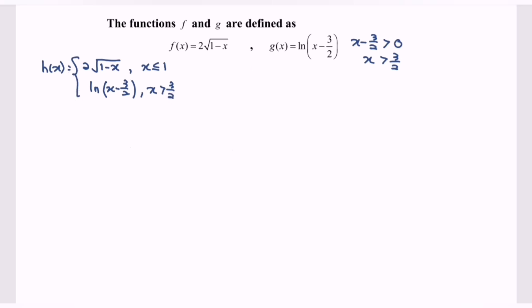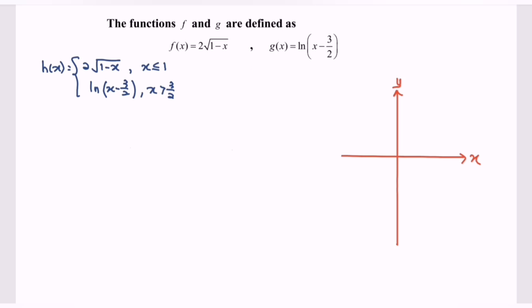That will be the piecewise function for h(x). Now the question asks us to sketch h(x), so we focus on 2 multiplied with the square root of 1 minus x. The domain is x less than or equal to 1. For the basic shape, either towards the right or towards the left — since the coefficient of x is negative, our graph will be towards the left.